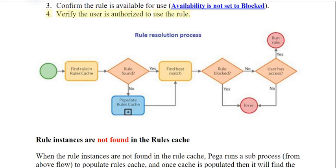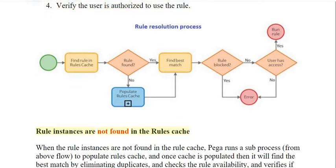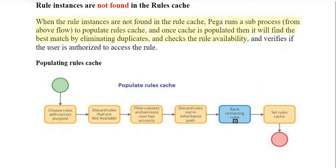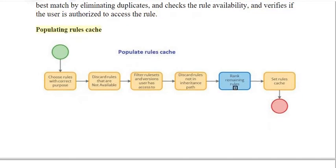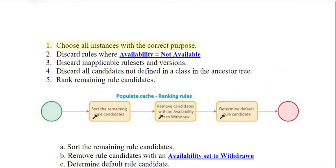When rule instances are not found in the rules cache, PEGA runs a sub-process to populate the rules cache, and once the cache is populated, it will find the best match by eliminating duplicates, checks the rule availability, and verifies if the user is authorized to access the rule.